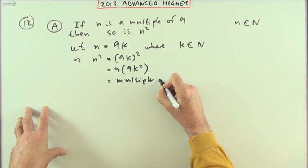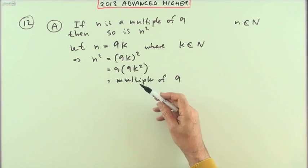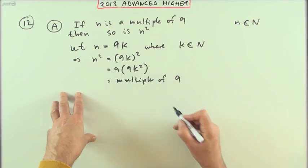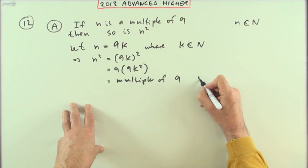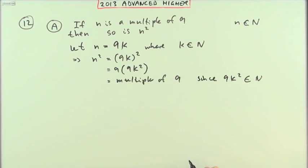But only a multiple of 9. You can't just say 9 times anything is a multiple of 9, only 9 times an integer is a multiple of 9. 9 times a half isn't, for instance. Which is a multiple of 9, since 9k squared will be a natural number.